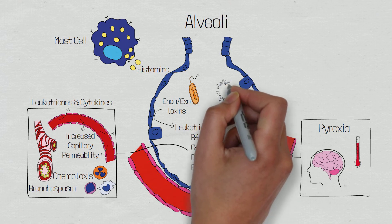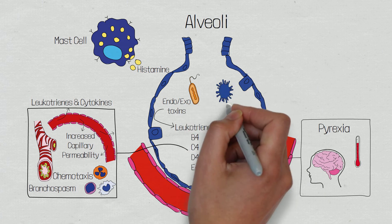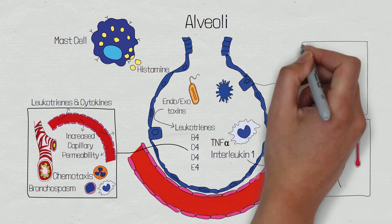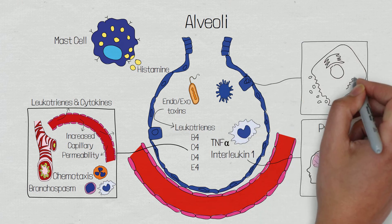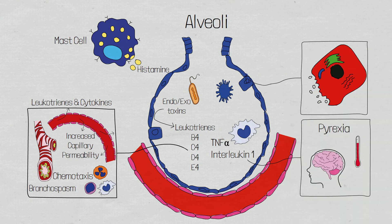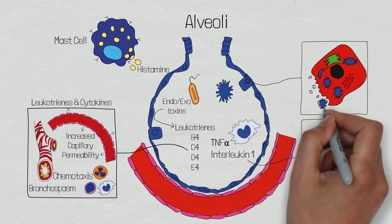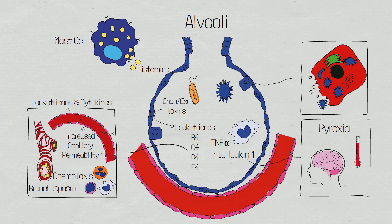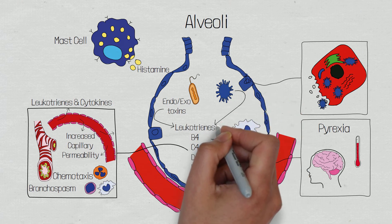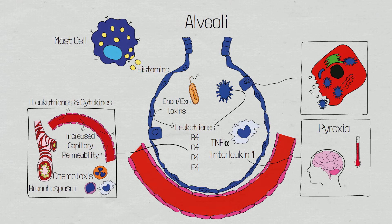Viruses cause the same inflammatory process but their mechanism of action is slightly different. A virus is not a living organism, so it must invade a living cell in order to replicate and survive. A virus will enter a cell and replicate its own proteins using the functional aspects of the living cell it has invaded. In doing so, the cell can no longer produce its own proteins necessary for survival, eventually leading to cell death. The injury and death of cells starts the inflammatory process as leukotrienes are released and alveolar macrophages phagocytose cellular debris, further enhancing the inflammatory cascade.